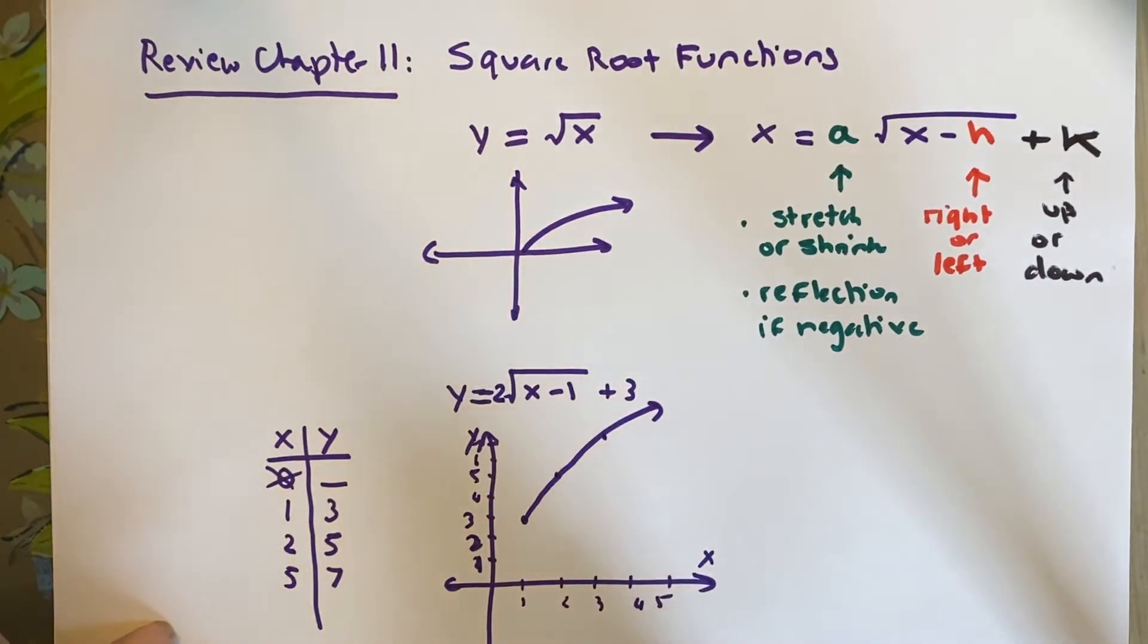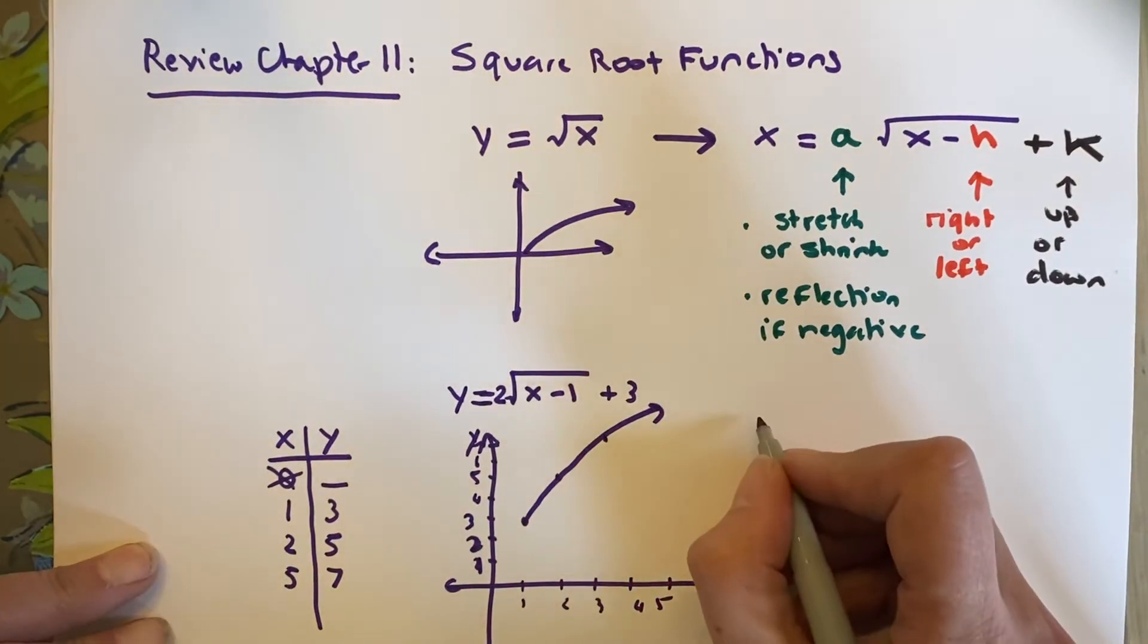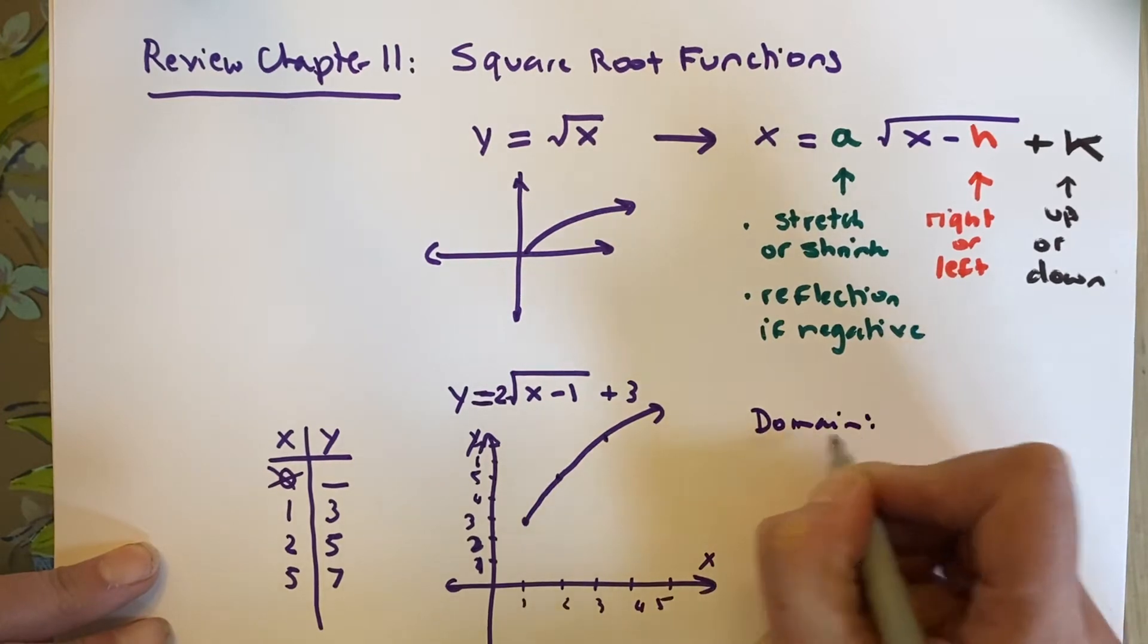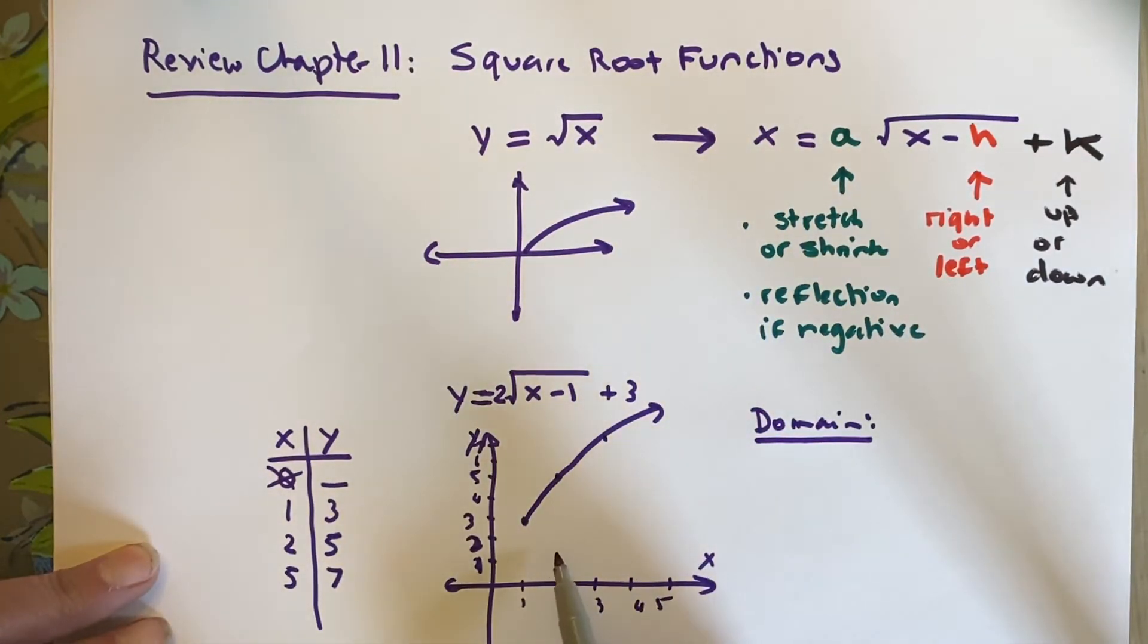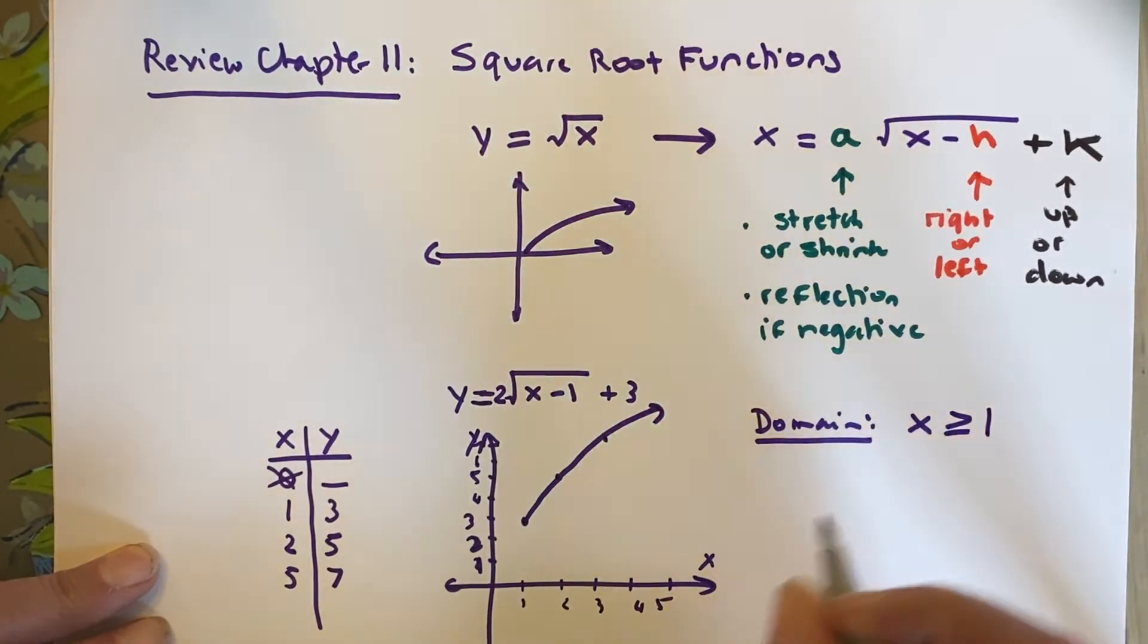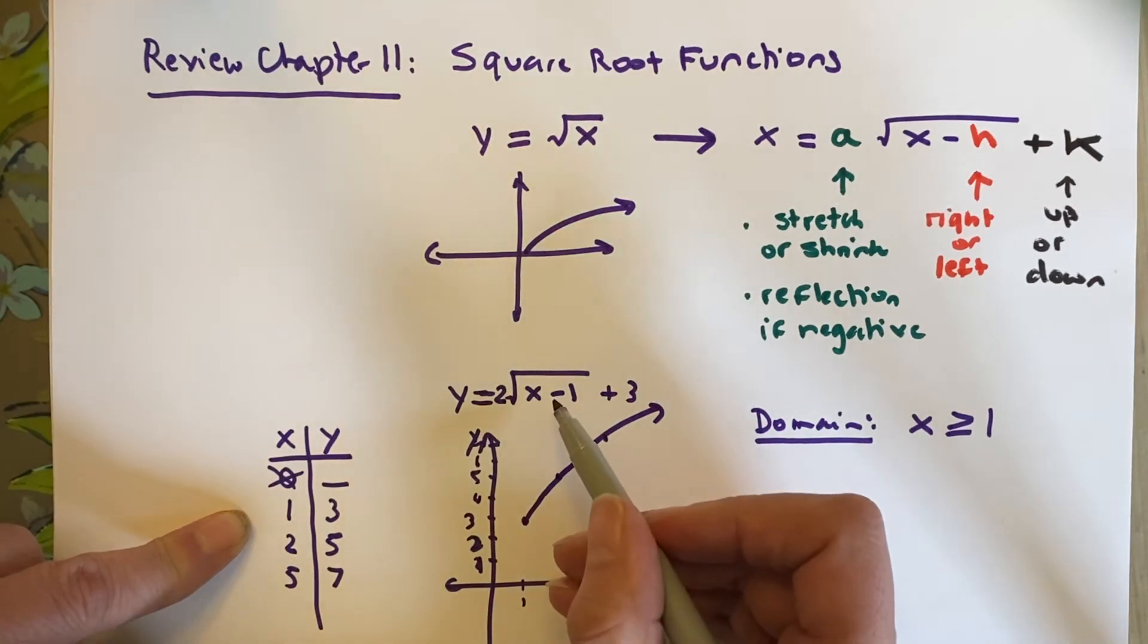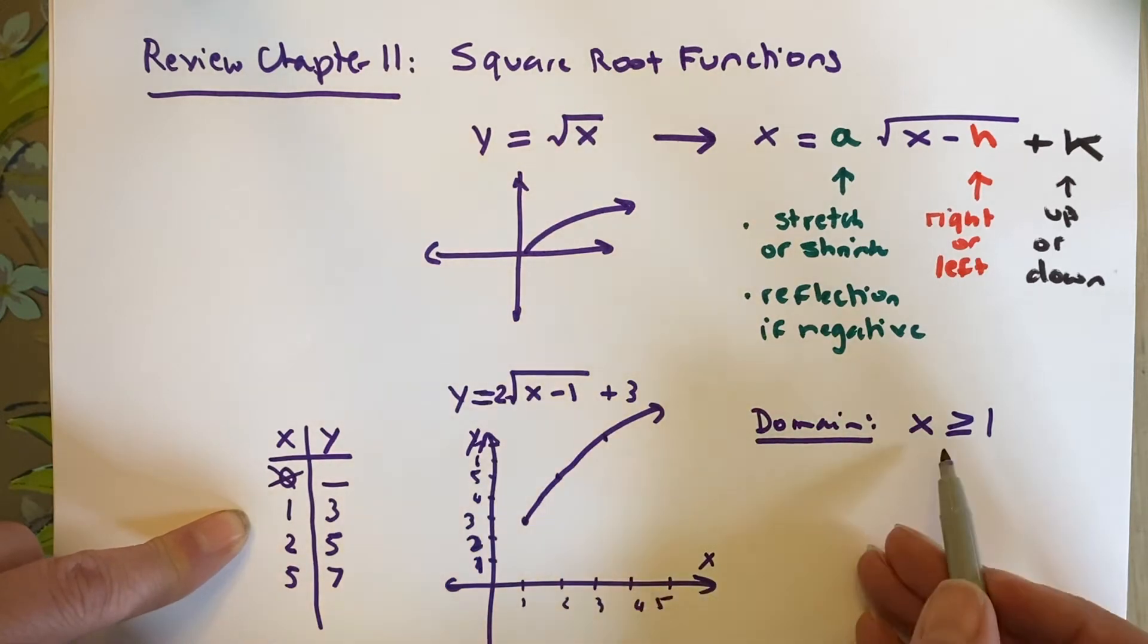What does this say about the domain and range? These functions, the domain and range is really important. And you have to give them on your test. Domain is all the x values. Well, you can't have any x value that's smaller than 1. So you have to say x is greater than or equal to 1. To find this out, you have to go to the smallest possible x value allowable. Make sure that you keep going until you hit that negative square root.